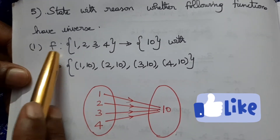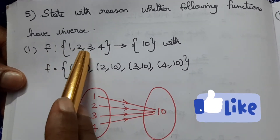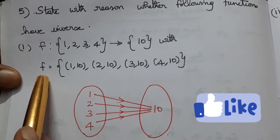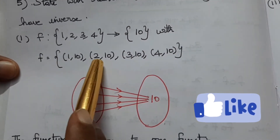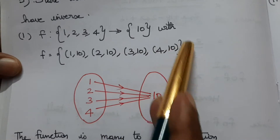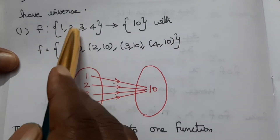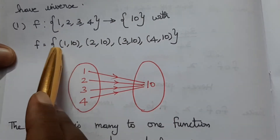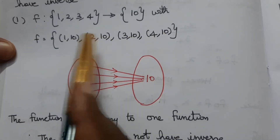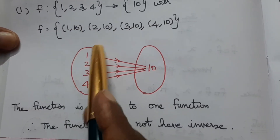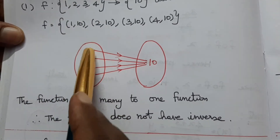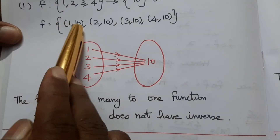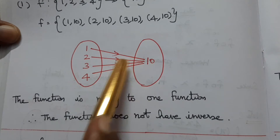State with reason whether the following functions have an inverse. First: f equals the set of pairs 1,10 — 2,10 — 3,10 — 4,10. So the domain A set is 1, 2, 3, 4 and the codomain B set has value 10. We can show this with a mapping diagram: 1, 2, 3, 4 all map to 10.